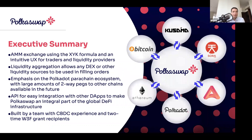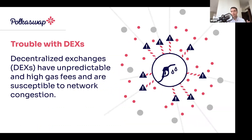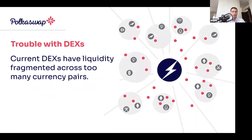Traditional DEXes, as you may have known if you've used Uniswap or Sushi, have a lot of issues. Transactions fail a lot — maybe not so much on Sushi because it's pretty cheap, but still. They have unpredictable and high gas fees, and they're susceptible to network congestion, so you do have a lot of problems making transactions predictably on Ethereum.